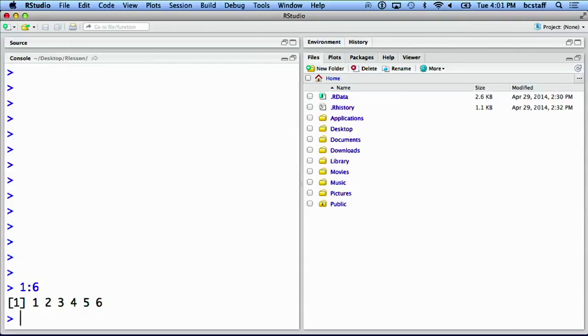To generate a more complicated series of numbers, we could use a function called seq, standing for sequence. The sequence function takes from, to, and by optional arguments. Here, we are generating a sequence of numbers from one through twelve, incremented by four.